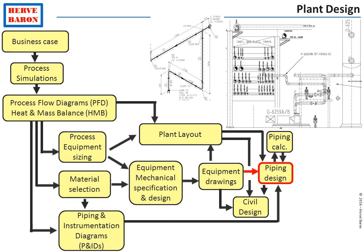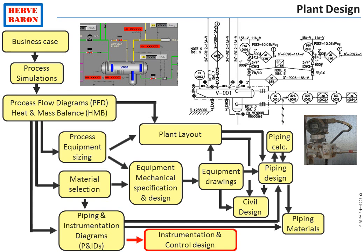Before piping construction drawings — i.e. isometric drawings — can be issued, information is needed from equipment vendors about the precise position of equipment nozzles. The piping and instrumentation diagrams define precisely the instrumentation and control. Therefore, they are also the basis for the instrument and control engineer to specify and purchase the field instrumentation as well as the control system.